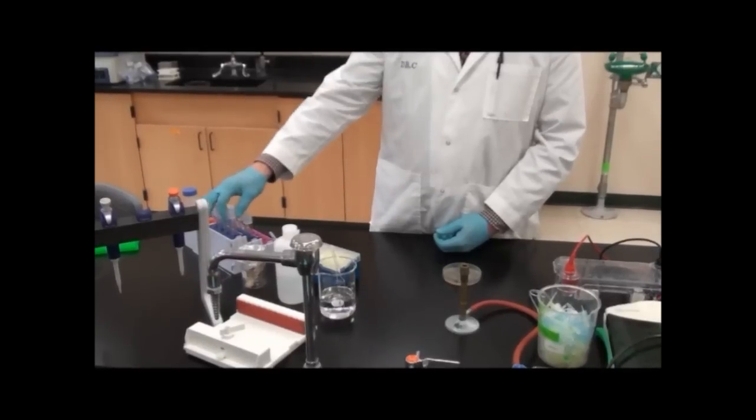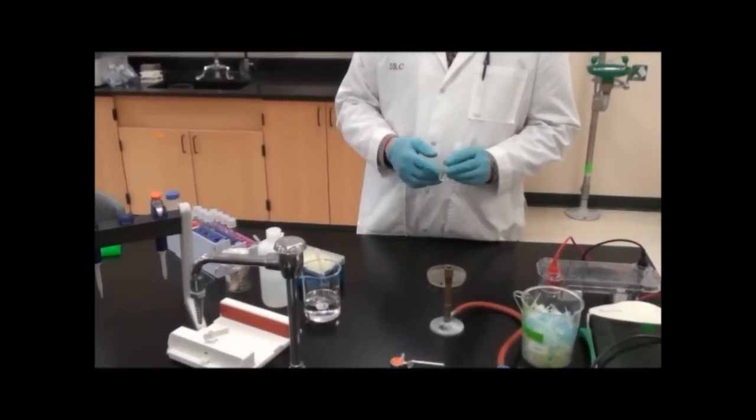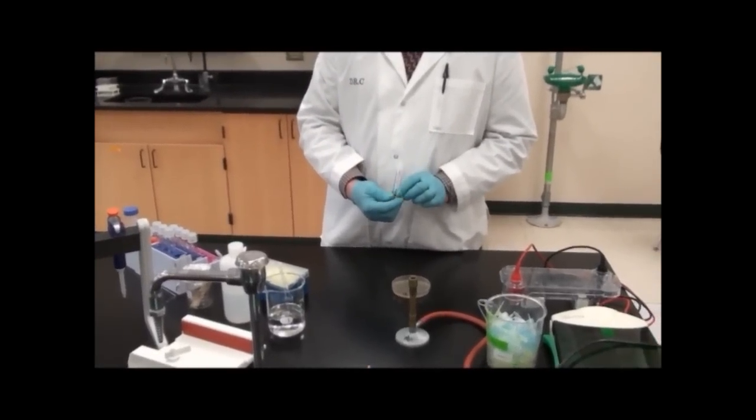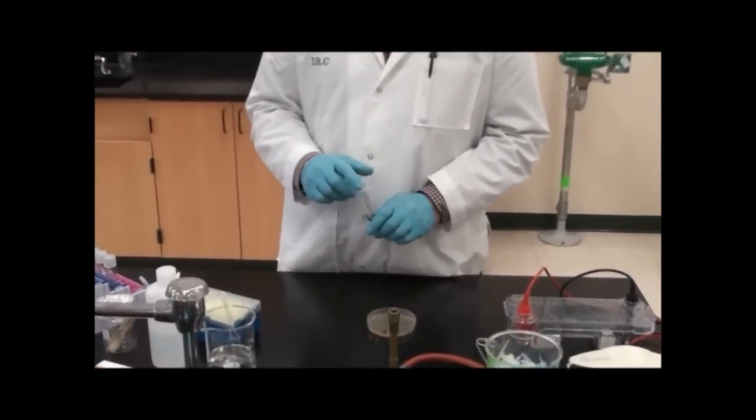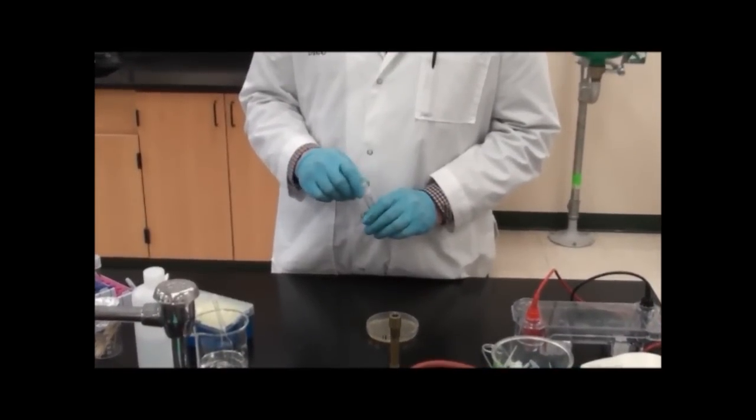That's how we'll start our culture to isolate our plasmids. Our next step is we'll grow this overnight and this will be full of a bacterial suspension. We'll harvest those bacteria and then isolate plasmids from them. That will be the plasmid isolation step.